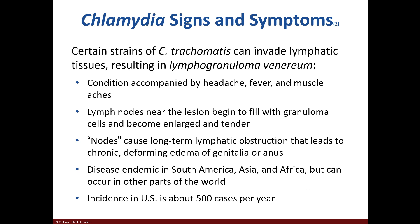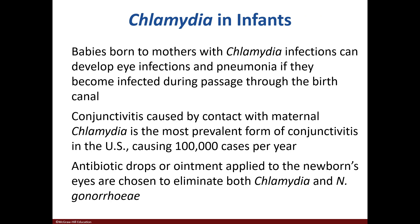Some strains invade the lymphatic system and cause lymphogranuloma venereum, which causes headaches, fever, swollen lymph nodes, and swelling of the genitalia or anus. Here in the US, there are about 500 cases of this form. Infants may also develop eye infections as well as pneumonia.